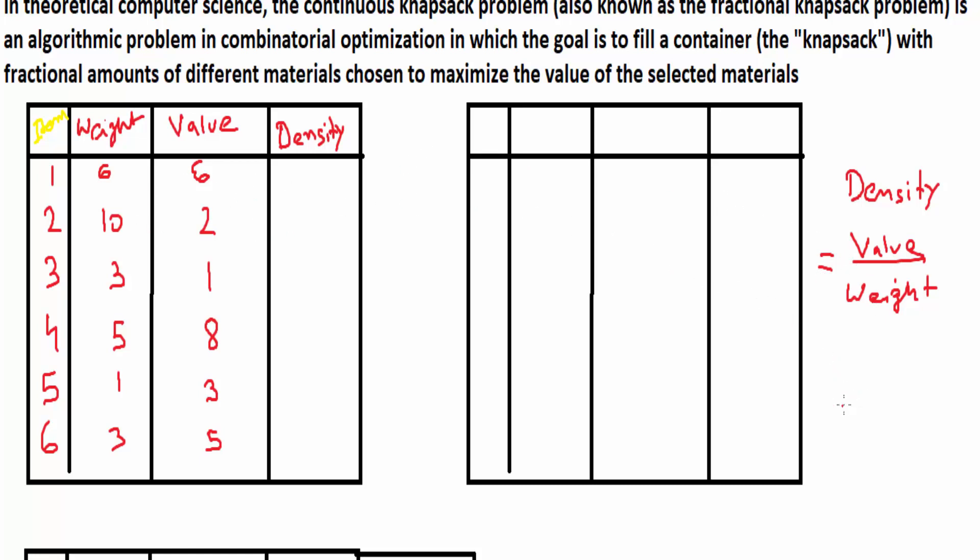For this question, the maximum capacity of the knapsack, that is W, is given as 16. Now we'll find the density for it. 6 upon 6 is 1. 2 upon 10 is 0.2.